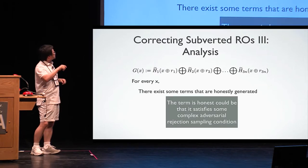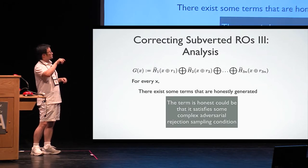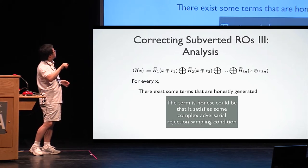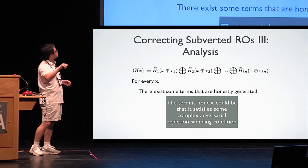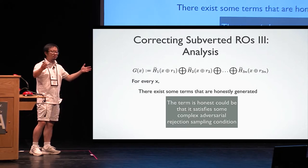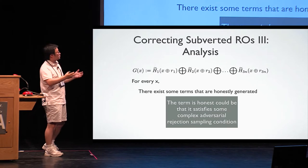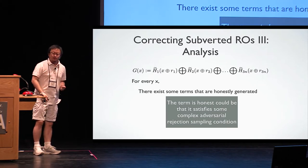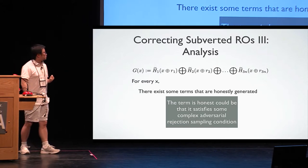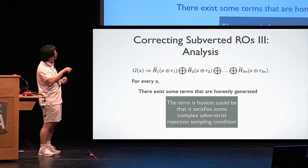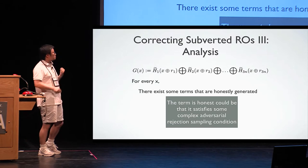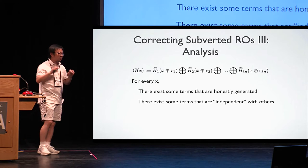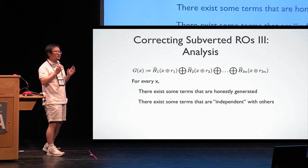Because the reason that this term is not changed, it might be because the adversary actually wants to keep it unchanged. The adversary might do a very complex rejection sampling using all of them as a whole. If the final output is something he likes, he would be happy to keep some terms unchanged. So that suggests we need to prove something more. So suppose this term is honest, we also need to prove there exists some term that is kind of independent with any other terms.